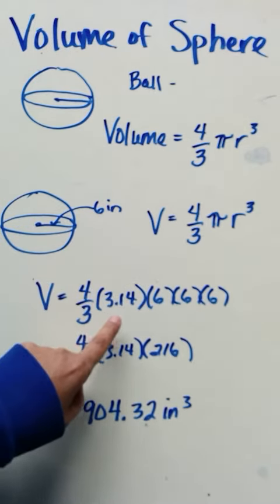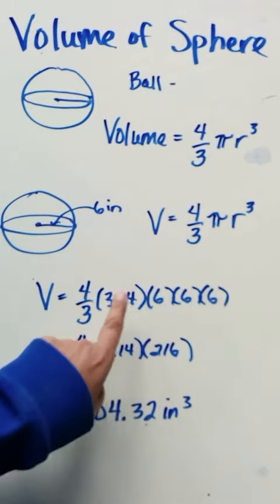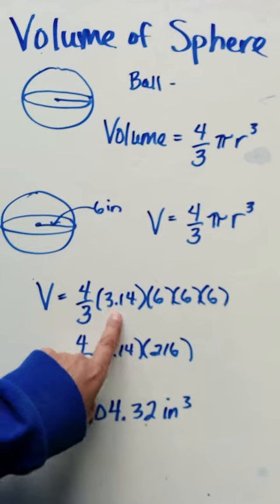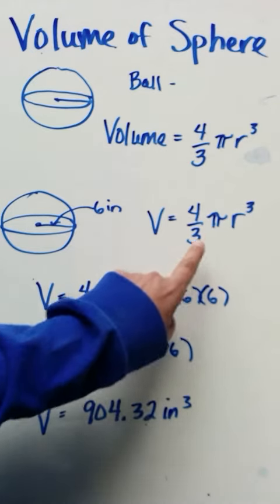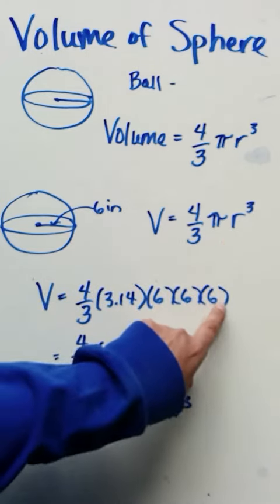I have four-thirds times 3.14, which is pi. So I've got four-thirds, four-thirds, 3.14 pi. And then for r cubed, I put six times six times six.